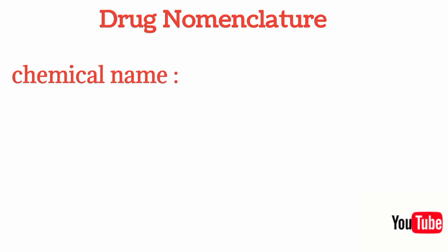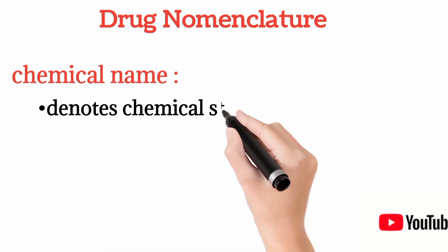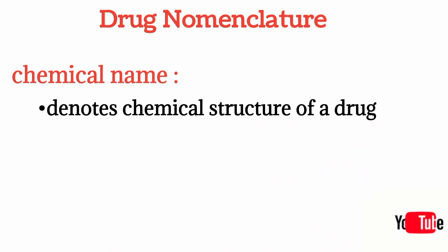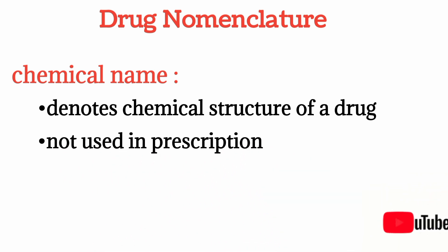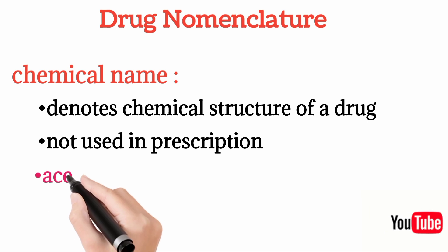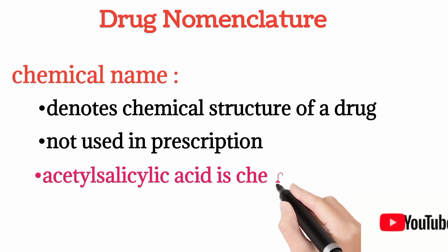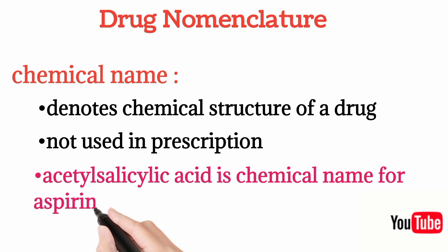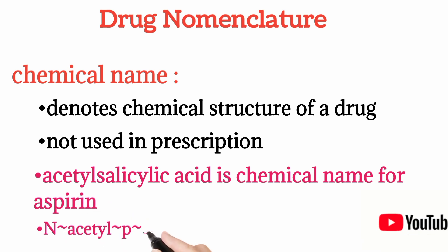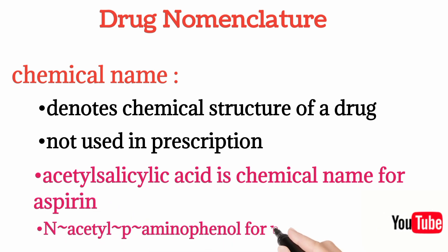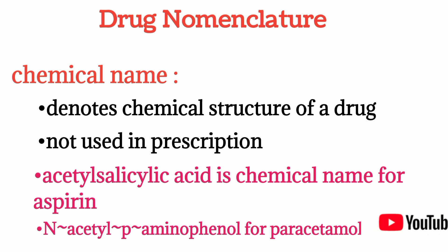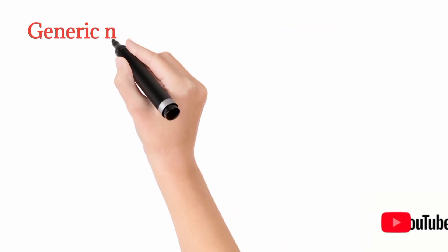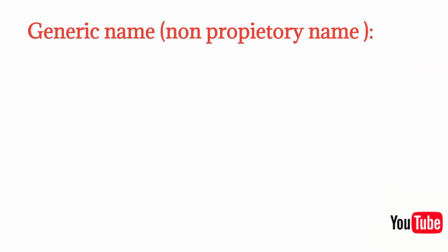First, we have chemical names. The chemical name of a drug simply denotes its chemical structure. They are not used in prescriptions — they are important only for the chemists who prepare the drug. For example, acetyl salicylic acid is the chemical name for aspirin, and n-acetyl aminophenol is the chemical name for paracetamol.